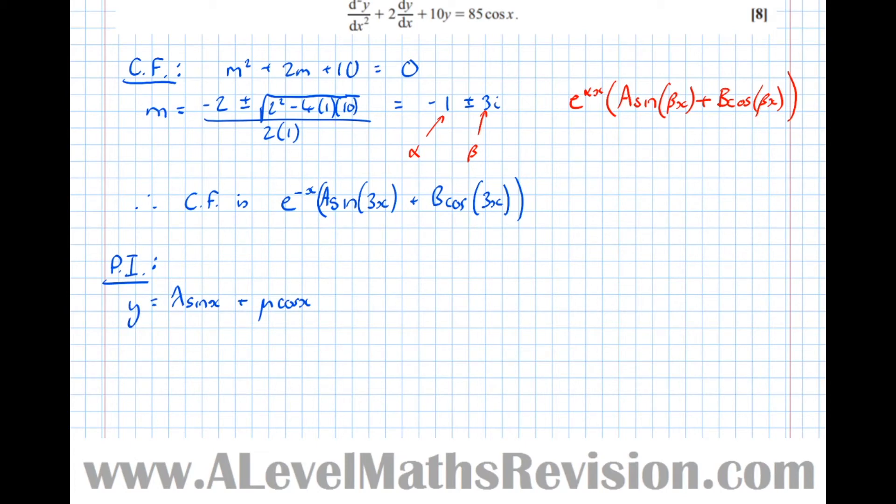So we're going to sum it back in now to find the values of lambda and mu. So dy/dx is equal to lambda cos x minus mu sine x. And d²y/dx² is equal to minus lambda sine x minus mu cos x.